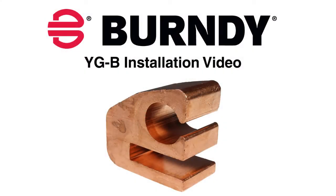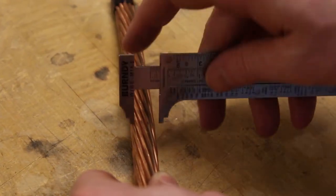Today we'll be using a YGB on a 4-aught conductor to a 1⁄4 inch bus bar. First, measure the conductor.